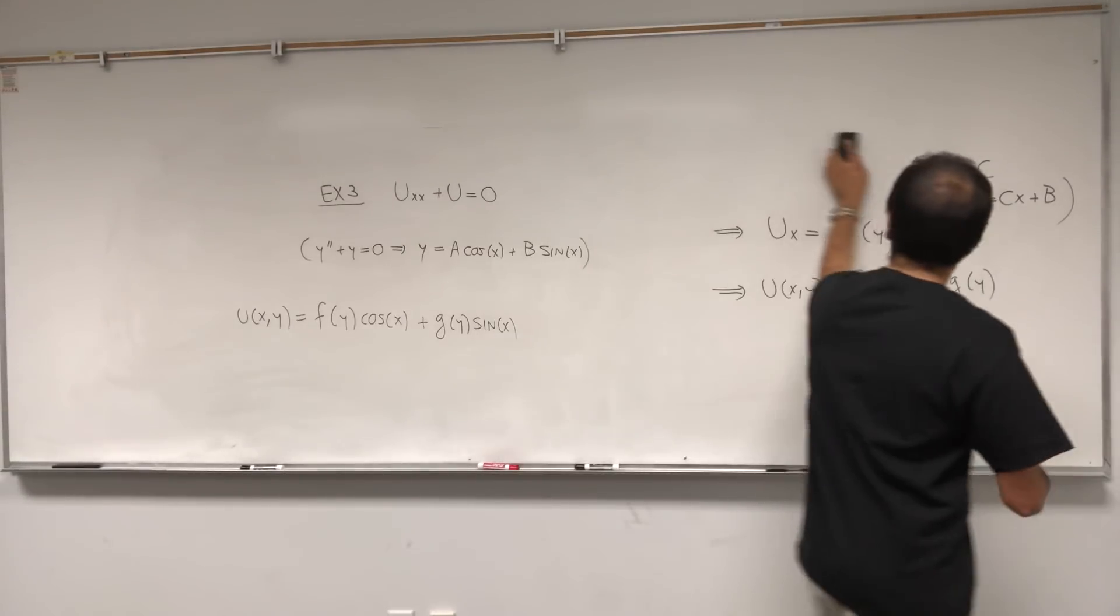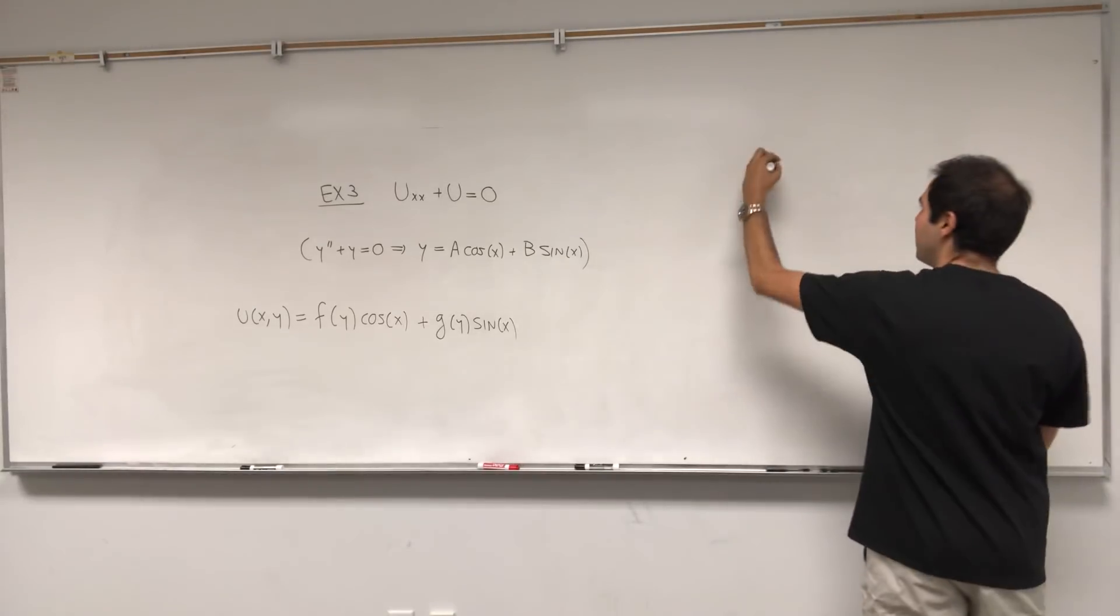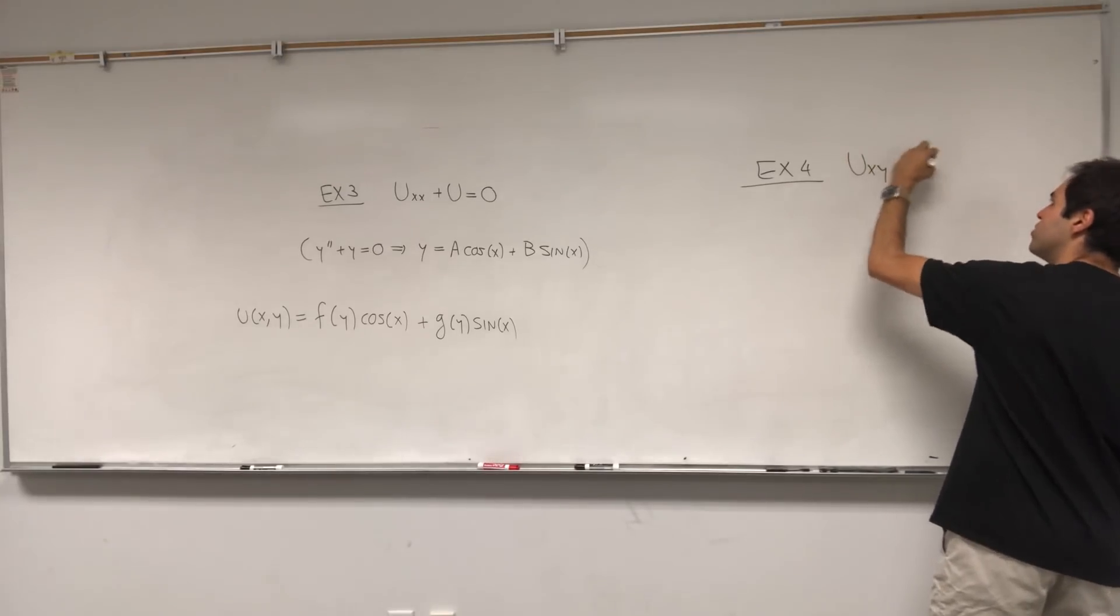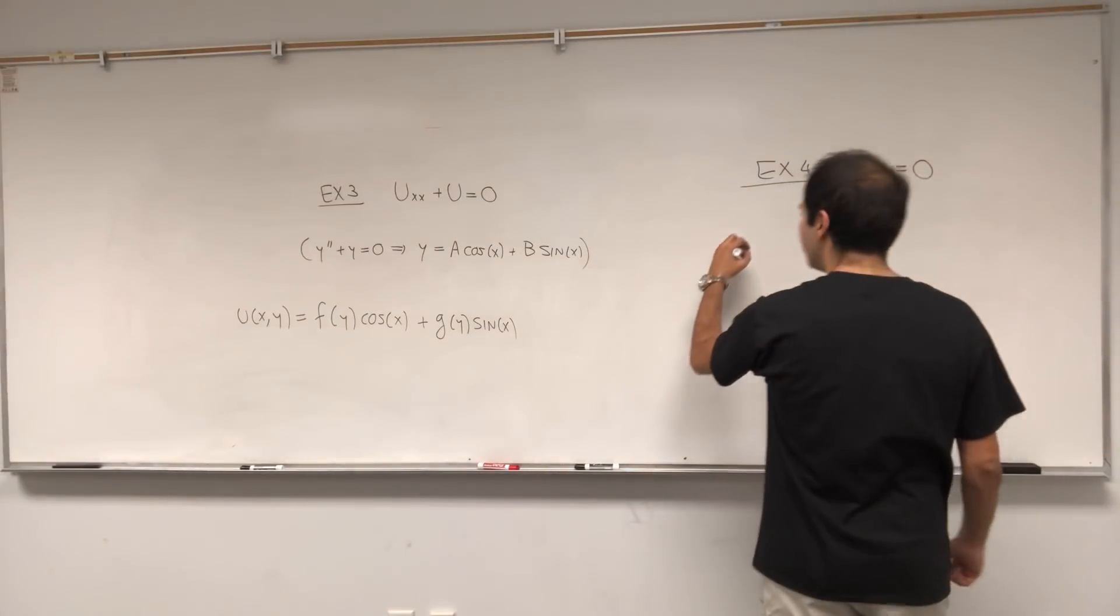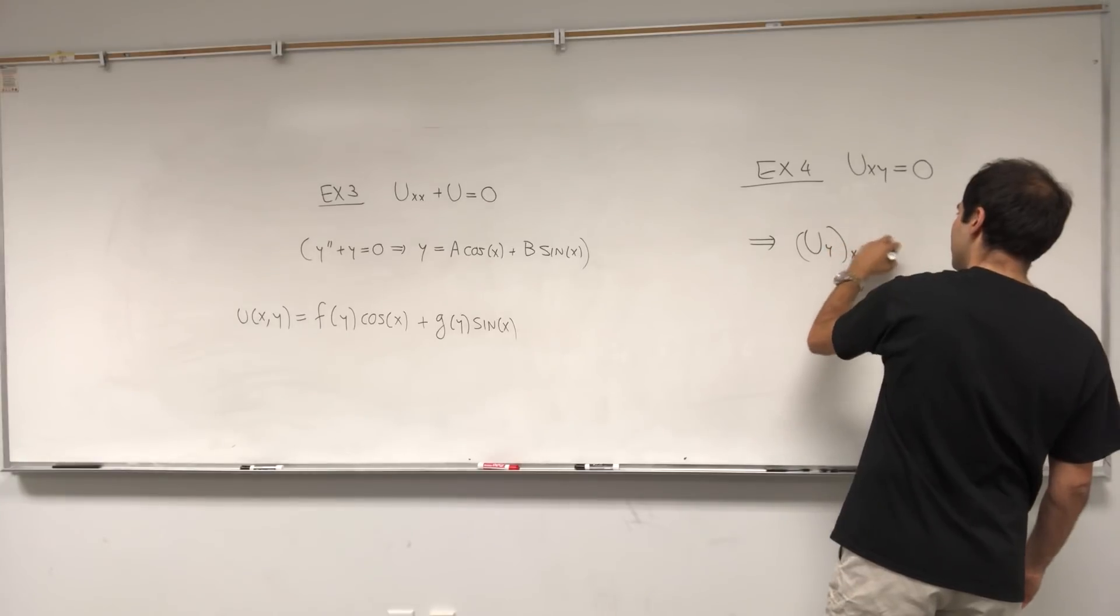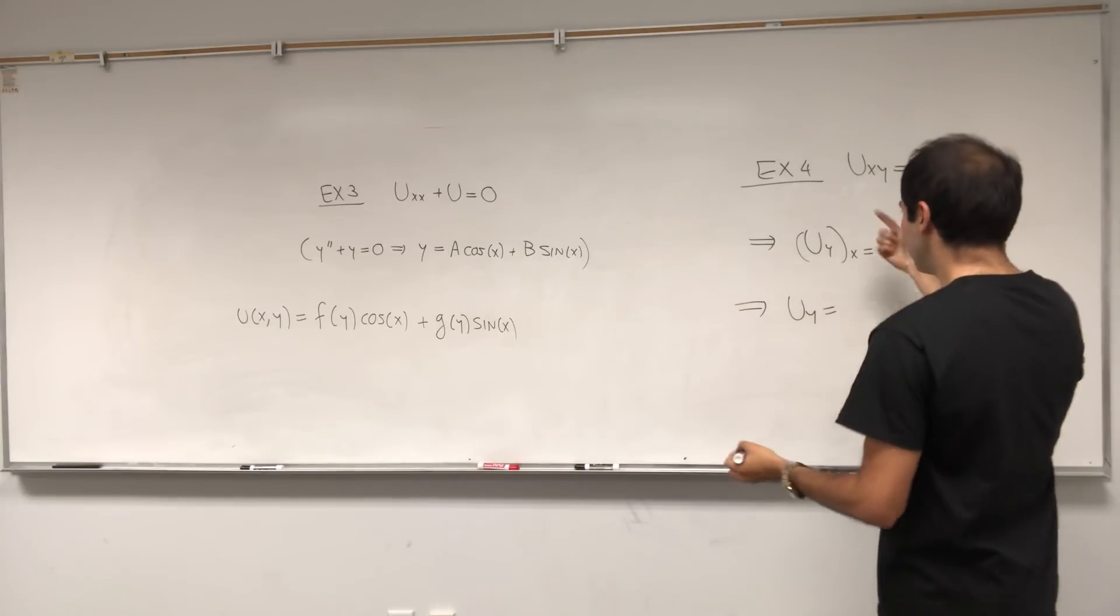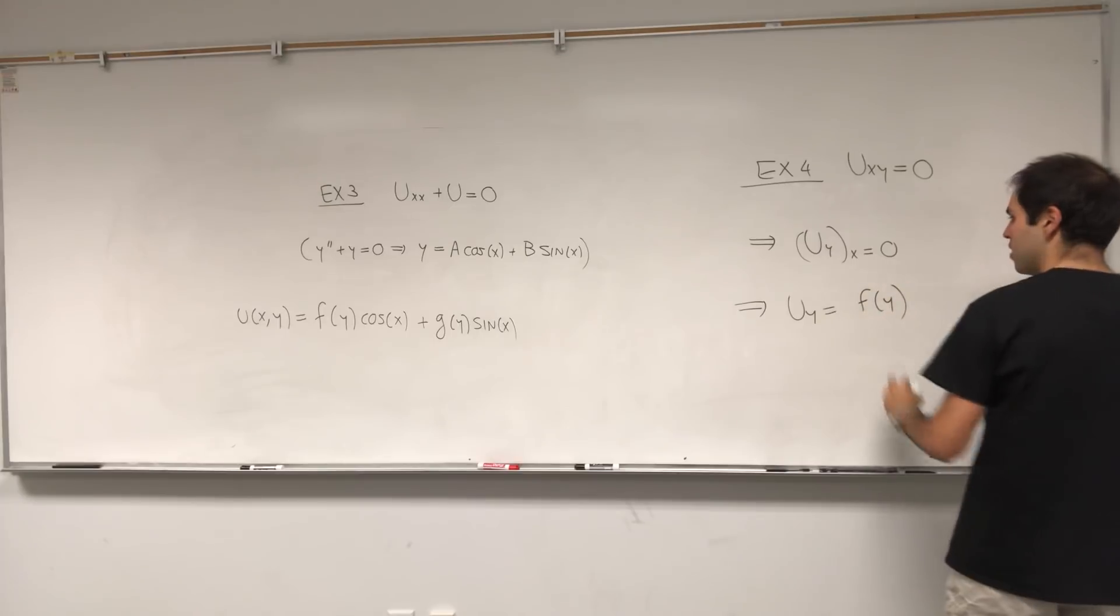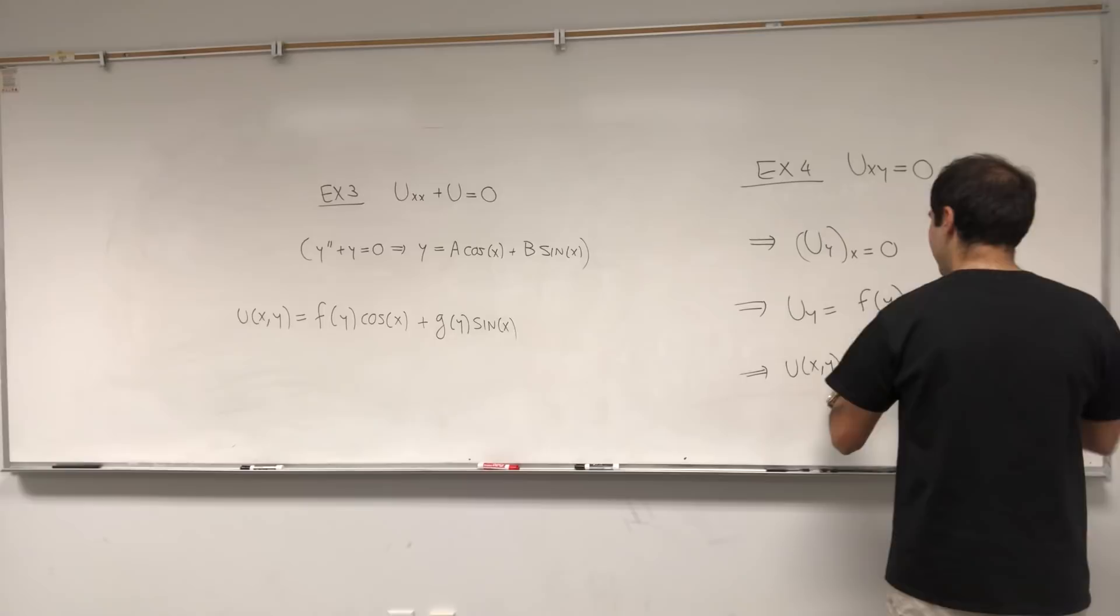And in fact, you might say this is cheating. We just had x's. What if we combine them? Not a problem. Let's do the following one: uxy equals zero. Well, what does that mean? This is the same thing as saying u(y) of x equals zero. So just as before, it means uy doesn't depend on x. So it's a function of y. And now, maybe what's more interesting is, well, we integrate that.